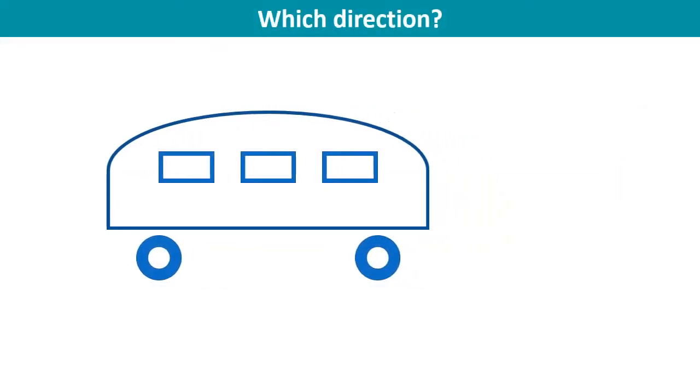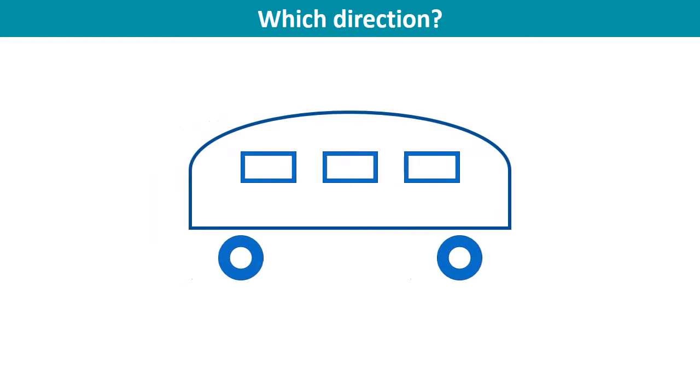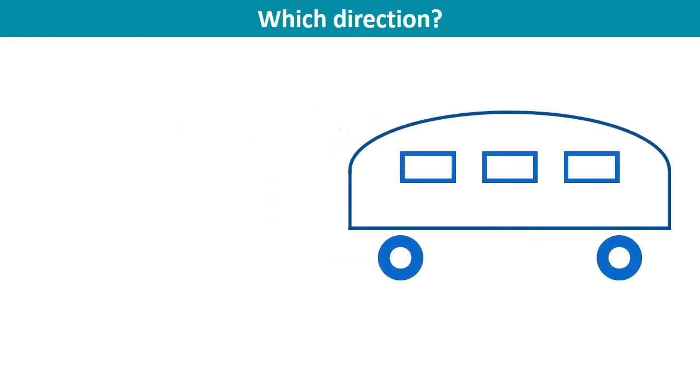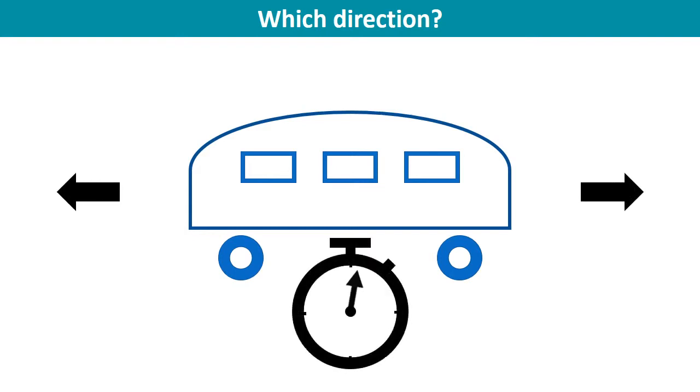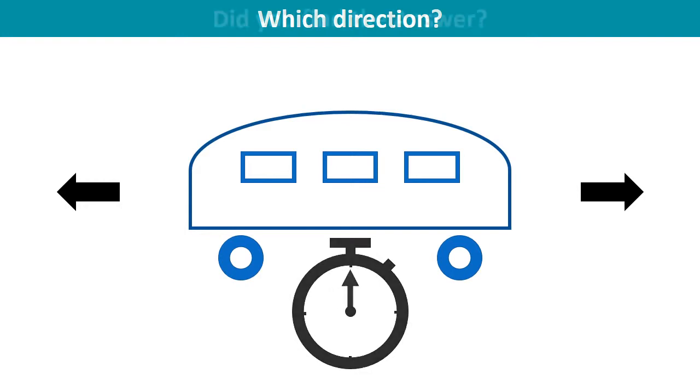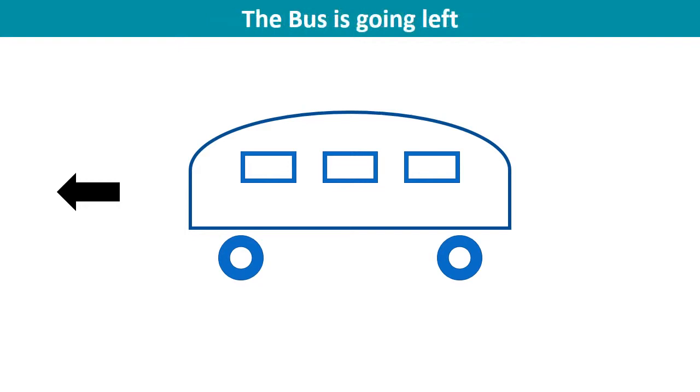In which direction is the bus pictured below going? It is a school bus in the United States. You have 10 seconds. Time is up. Did you find the answer? The bus is going left. It is left hand drive in the United States. Since you cannot see the door, the bus has to go left.